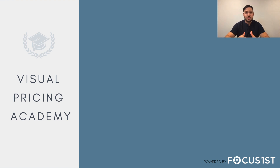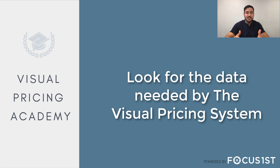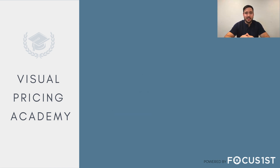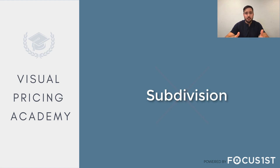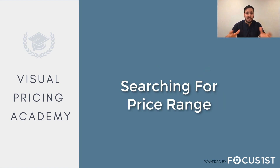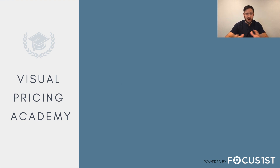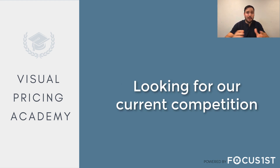When we looked at the pricing MLS search, we were looking for the right data for the visual pricing system to do its job and find the right patterns versus what kind of makes sense to search for. When it comes to positioning we're going to do the exact same thing. In this case we're not going to be searching for a subdivision — we're going to be searching for data in a price range. We want to be looking at competition that we're going to price against, and our buyers are probably looking in a certain range that would find other homes much like ours in a certain price area.